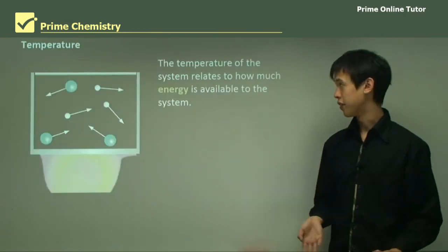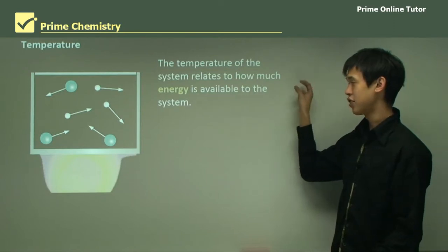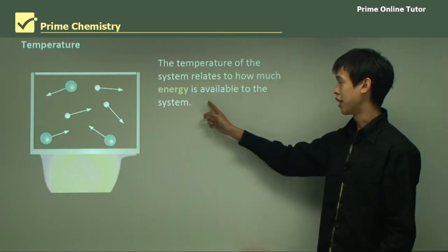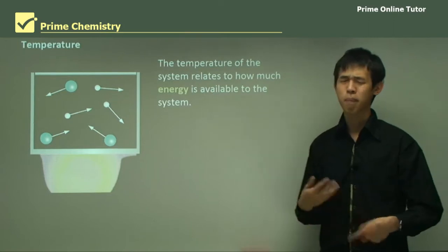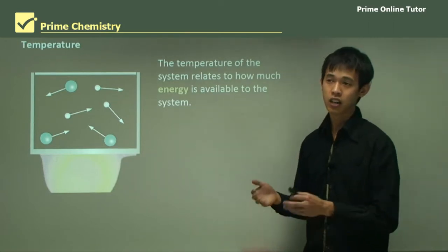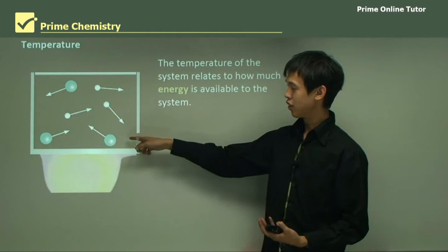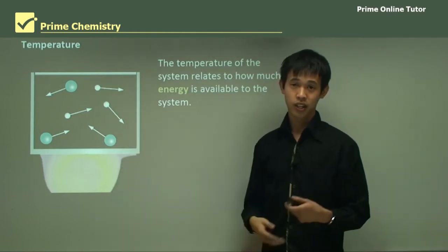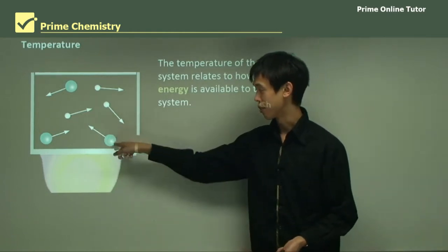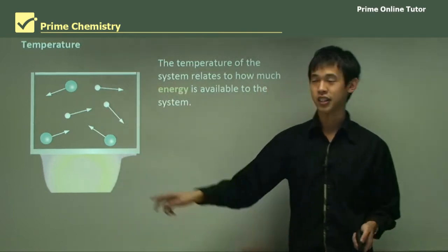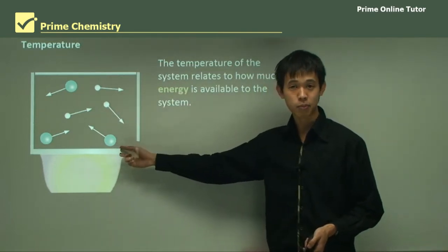Looking at temperature first: temperature essentially relates to how much energy is available to the system. Temperature is a measure of the energy of each molecule — we can use it to measure the speed at which molecules will be moving around in a container. The more heat we impart, the faster they move.